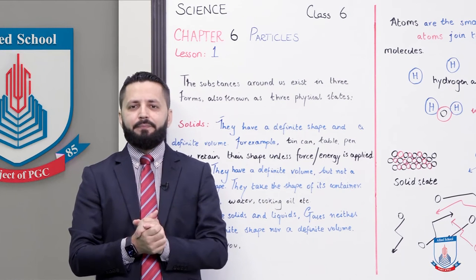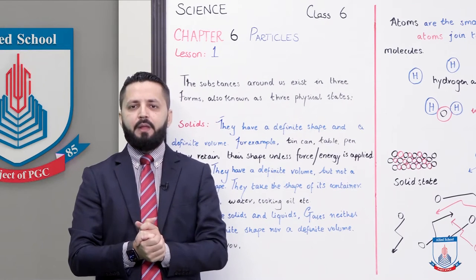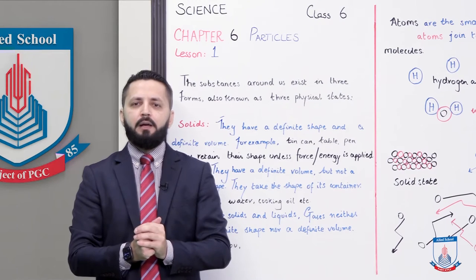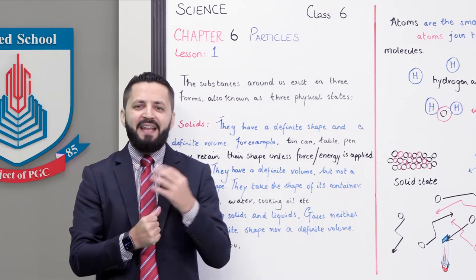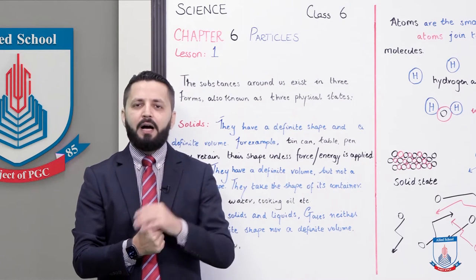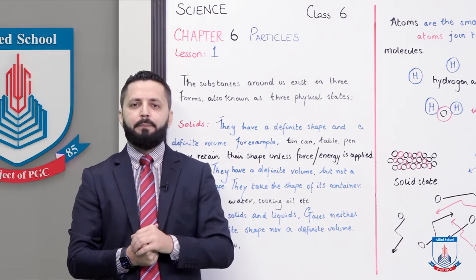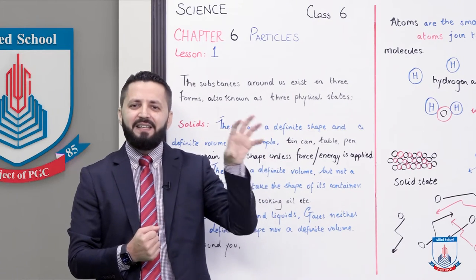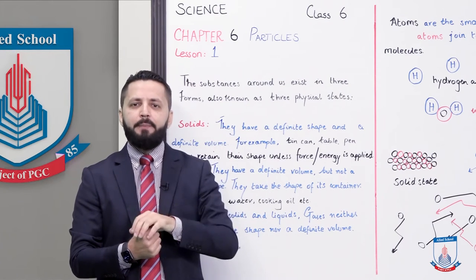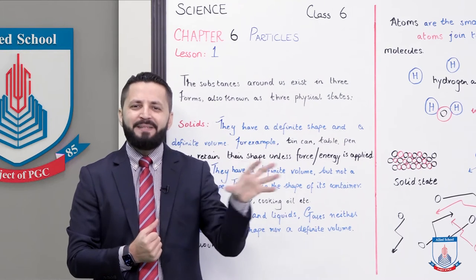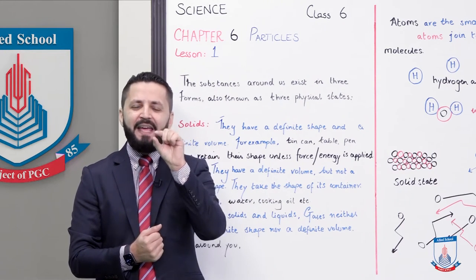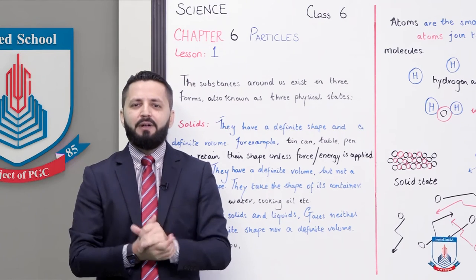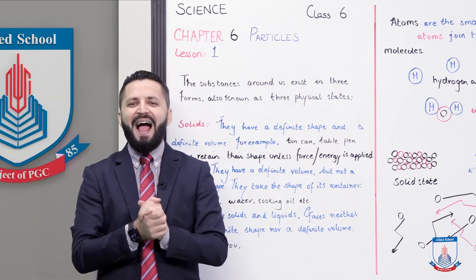Matter is anything that can occupy space and has mass. A solid also occupies space — for example, your notebook on the table is occupying space. Matter is anything that occupies space and has mass, meaning weight. Your notebook has weight, same goes with a pencil. Even a tiny sand grain has a definite shape and volume, occupies space, and has mass. So from a sand grain or the tiniest known particle — the atom — to even you, we are all parts of matter.